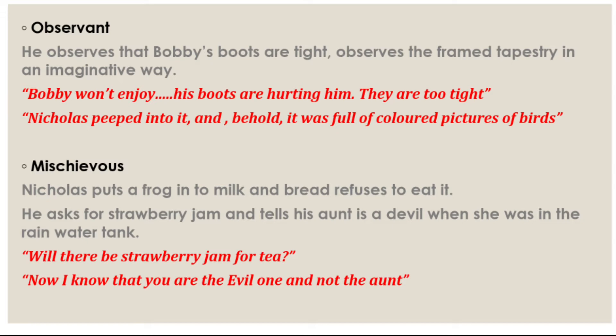The last point about Nicola is that he is really mischievous. Nicola puts a frog into milk and bread and refuses to eat it. He asks for strawberry jam and tells his aunt she is the devil when she is stuck in the rain water tank. This also proves he is a good tactician — he takes the opportunity when the aunt is in trouble. The quoted lines are: 'Will there be strawberry jam for tea?' and 'Now I know that you are the evil one, not the aunt.' Short, significant lines like these are easy to remember when writing answers.